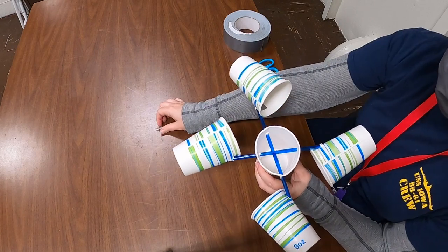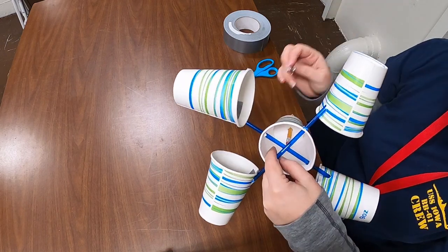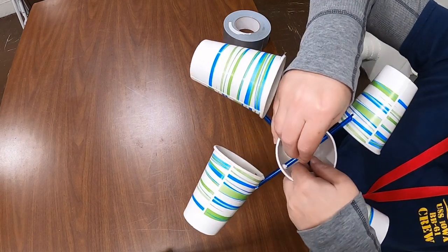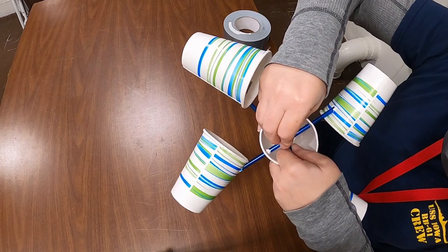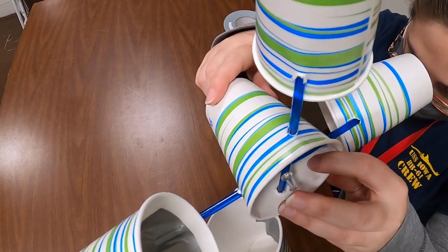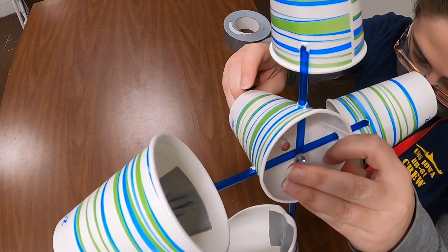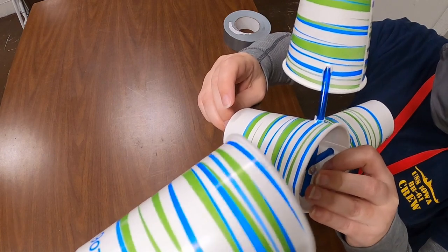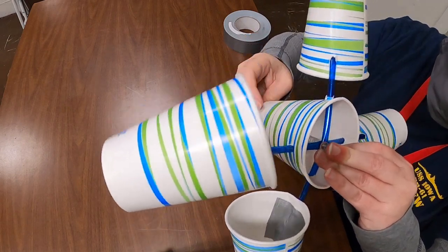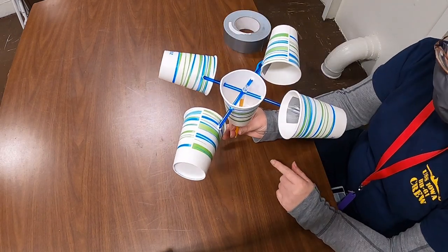And this is where you're going to need your thumbtack. You're going to take your thumbtack and you're going to go through both straws and down into the pencil. There's one straw. Two straws. Let's see if I can get this on camera. So you're going to take your pencil eraser and you're just going to push your thumbtack into your eraser. And then you have your middle axis that your cups rotate around on.